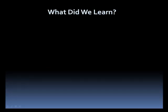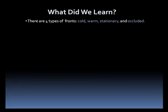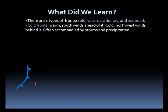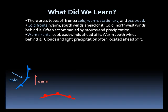So what did we learn? There are four types of fronts. A cold front has warm air ahead of it and colder air behind it. They often produce storms and precipitation. A warm front has cool east winds ahead of it with a warmer southerly flow behind it.